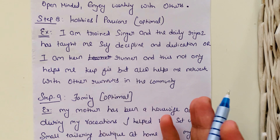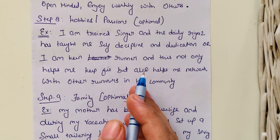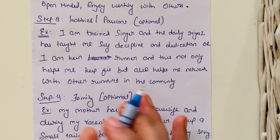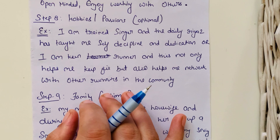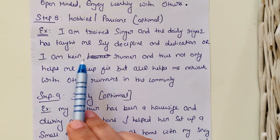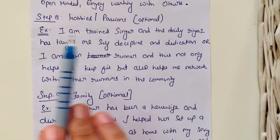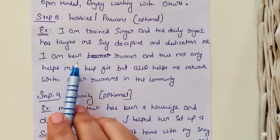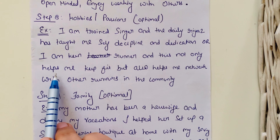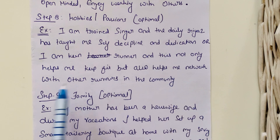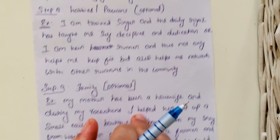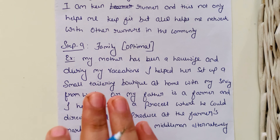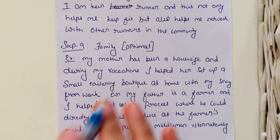Step number eight is hobbies and passions. This is optional, but include it if it helps you build a connection with the interviewer, if it's significant, or if it helps establish relevant skills. For example: 'I am a trained singer and doing daily rehearsals has taught me self-discipline and dedication,' or 'I am a keen runner — this not only keeps me fit but also helps me network with other runners in the community.' Keep this section very brief.